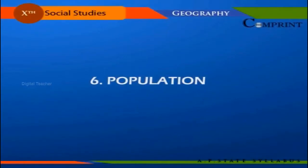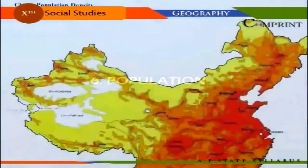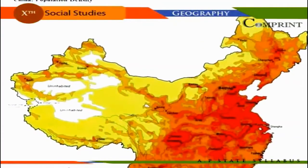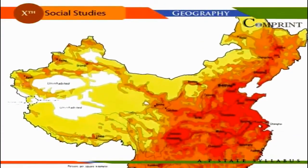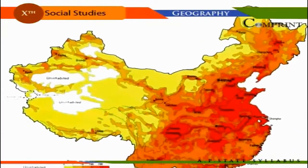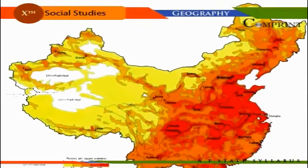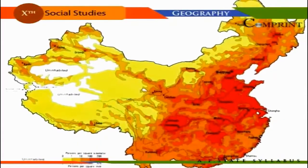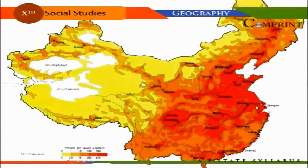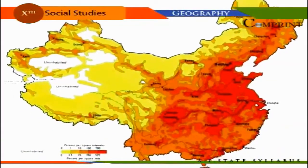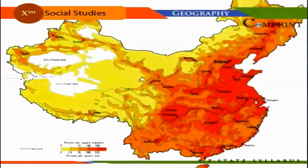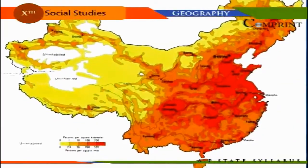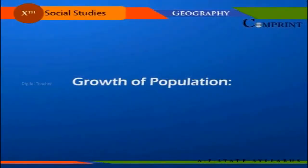India occupies a unique position in the world's population. Though India occupies the seventh place in geographical area, in terms of population it is the second most populous country in the world, next only to China.